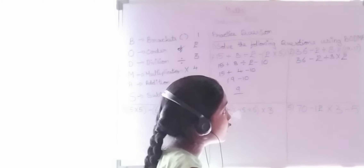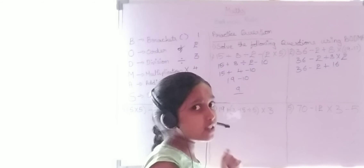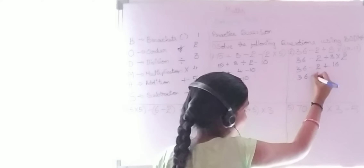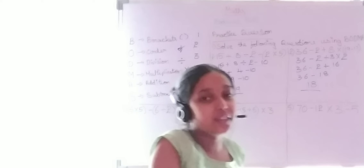Second question: 36 − 2 + 8 × (19 − 7). First priority is the bracket: 19 − 7 = 12. Wait, 19 − 17 = 2. Next do multiplication: 8 × 2 = 16. Now we have 36 − 2 + 16. Addition: 2 + 16 = 18. Then 36 − 18 = 18. The final answer is 18.